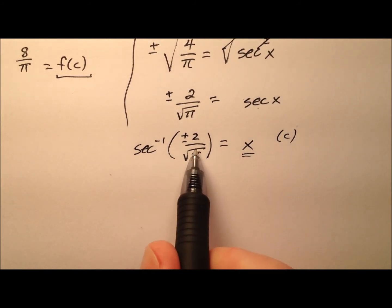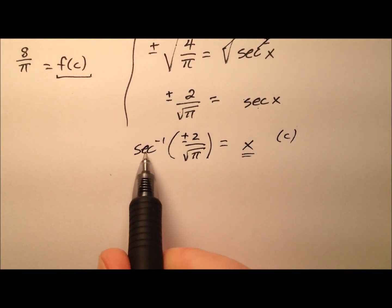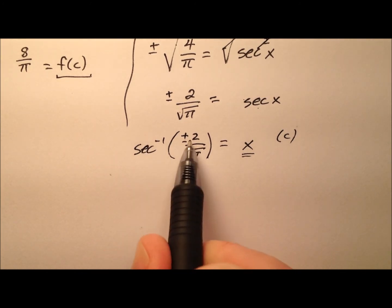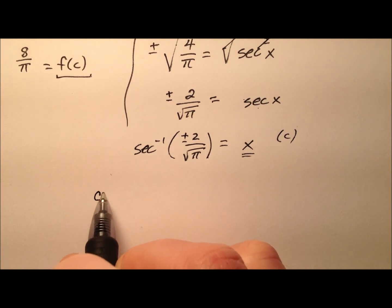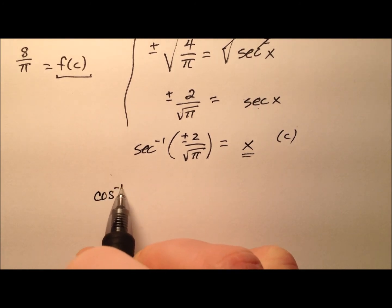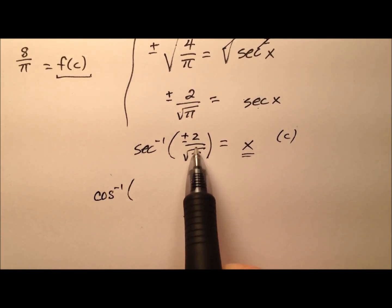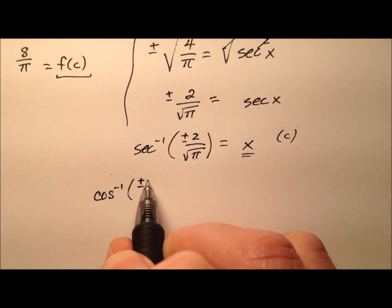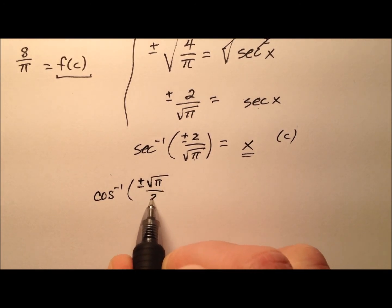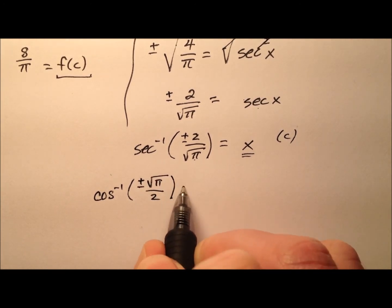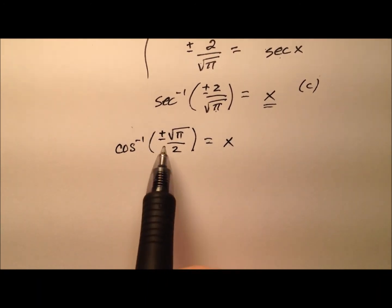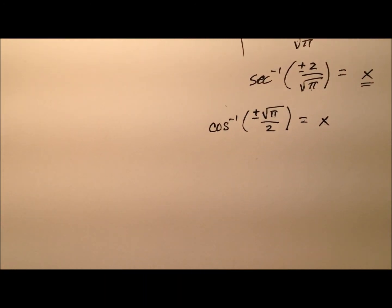Secant is the reciprocal of cosine, so I can use inverse cosine but I have to flip this ratio over. So it will be the inverse cosine of plus or minus the square root of pi over 2 equals x, giving two values — one for the positive and one for the negative.